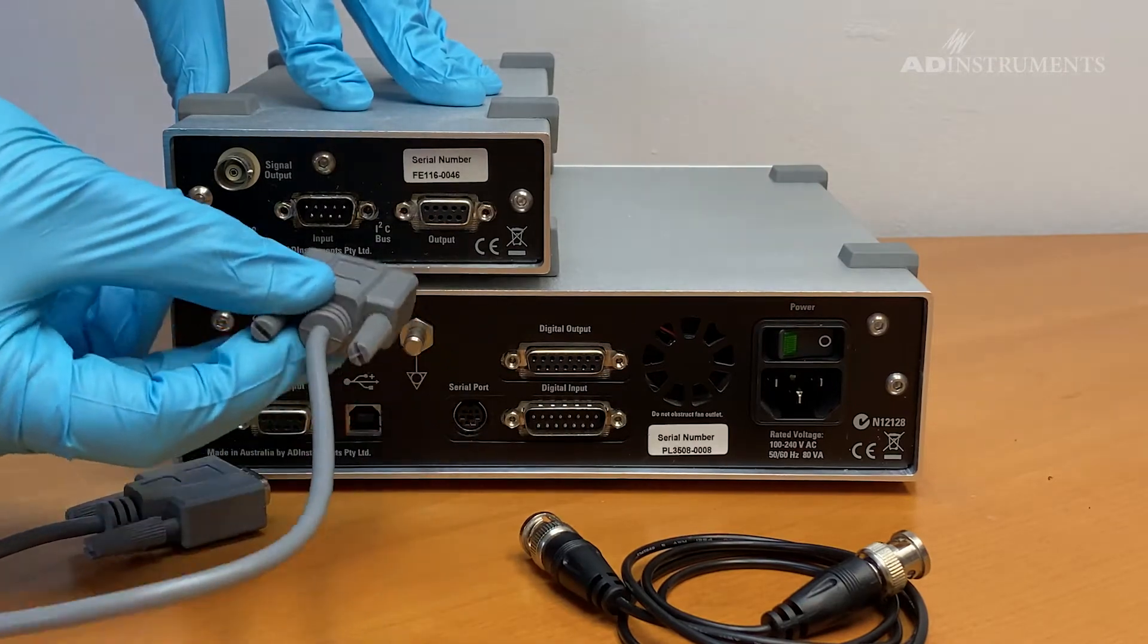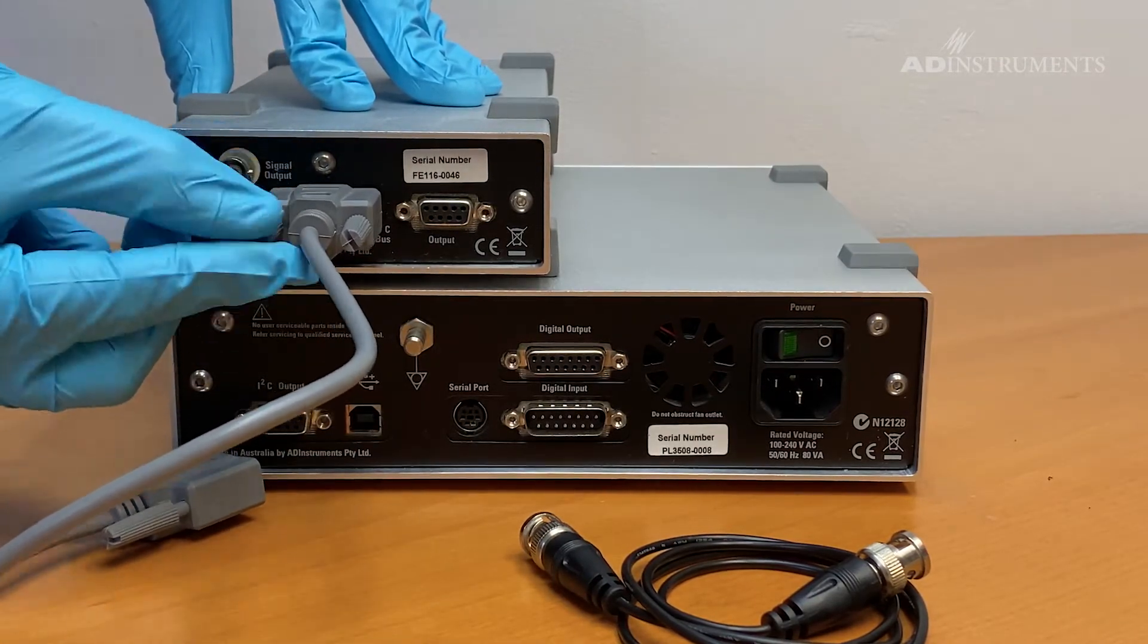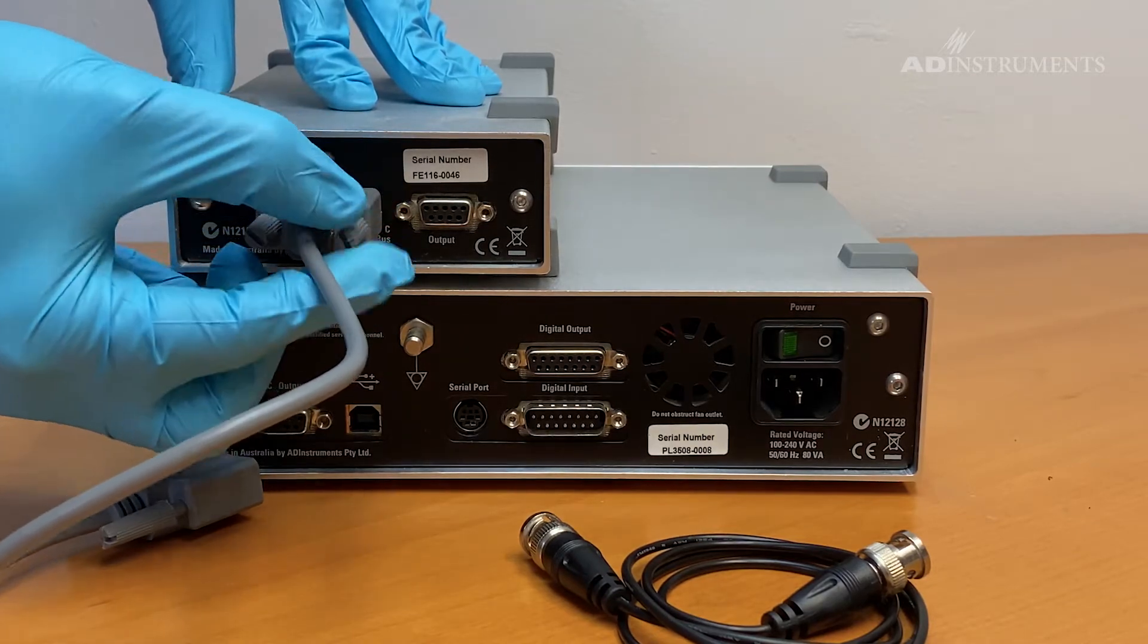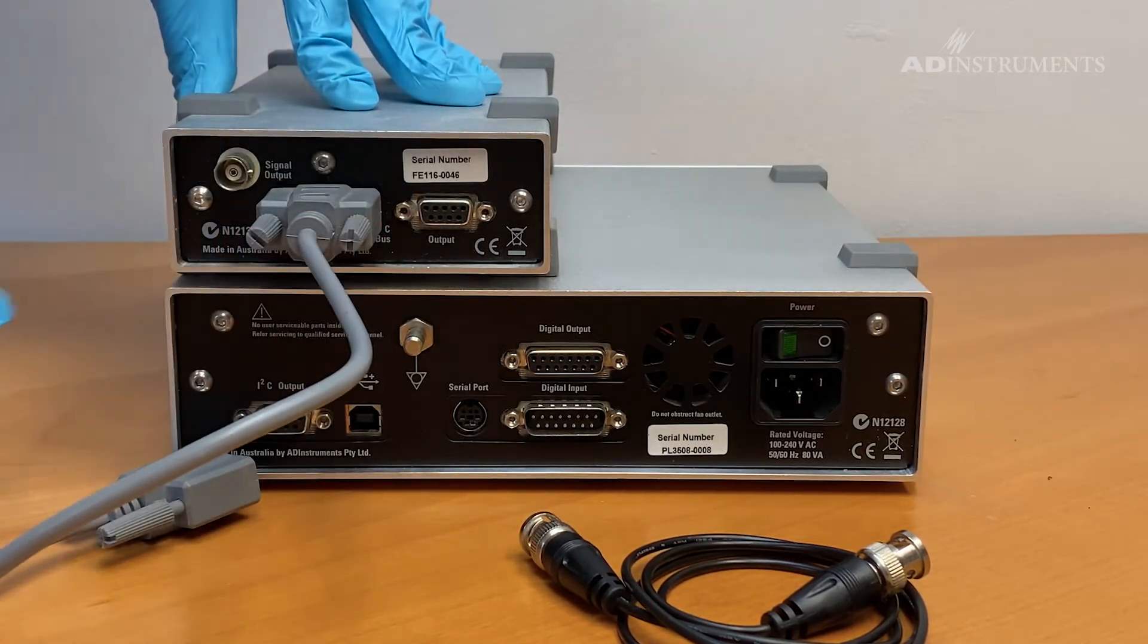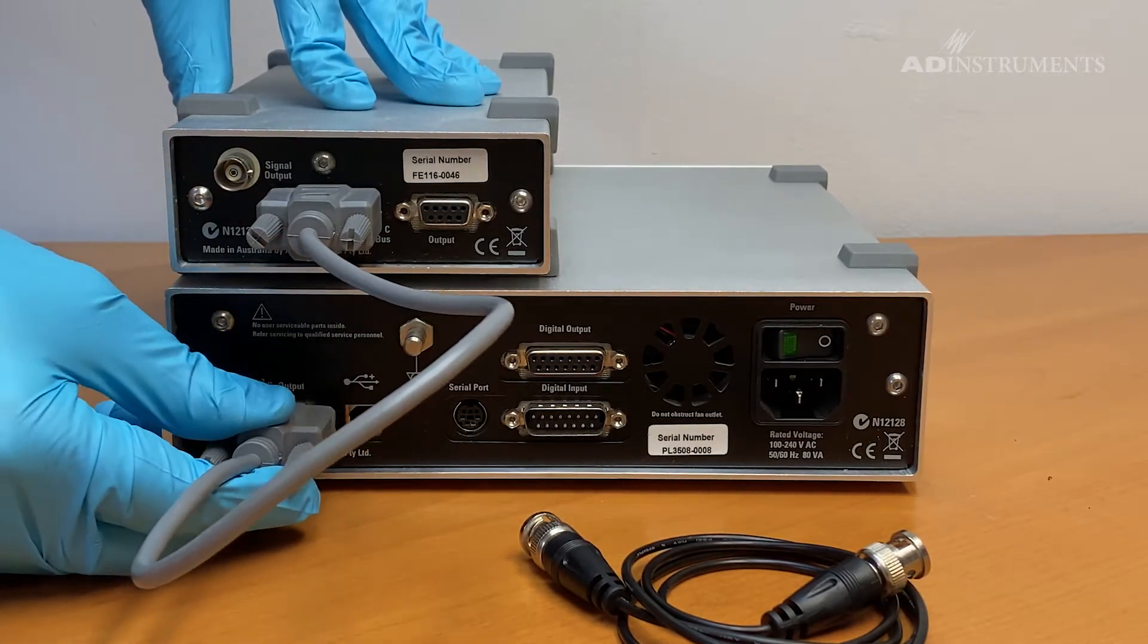Connect the I2C cable from the I2C input on the back of the GSR amp to the I2C output on the back of the PowerLab.